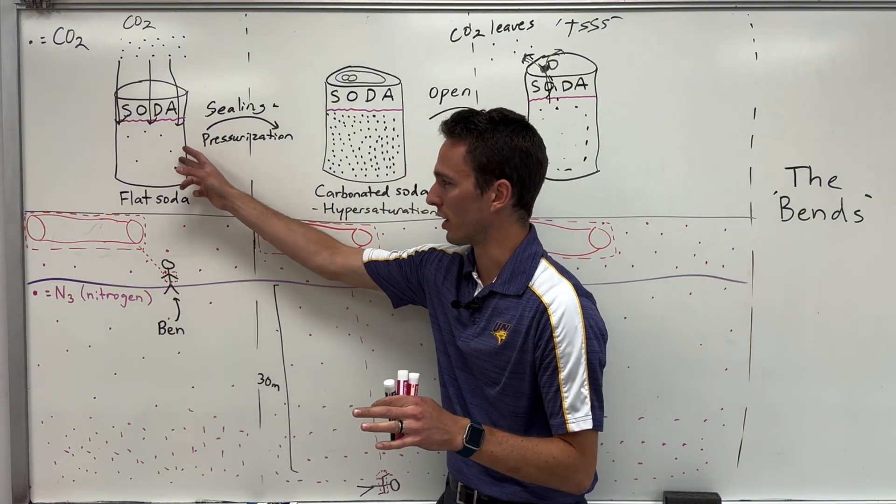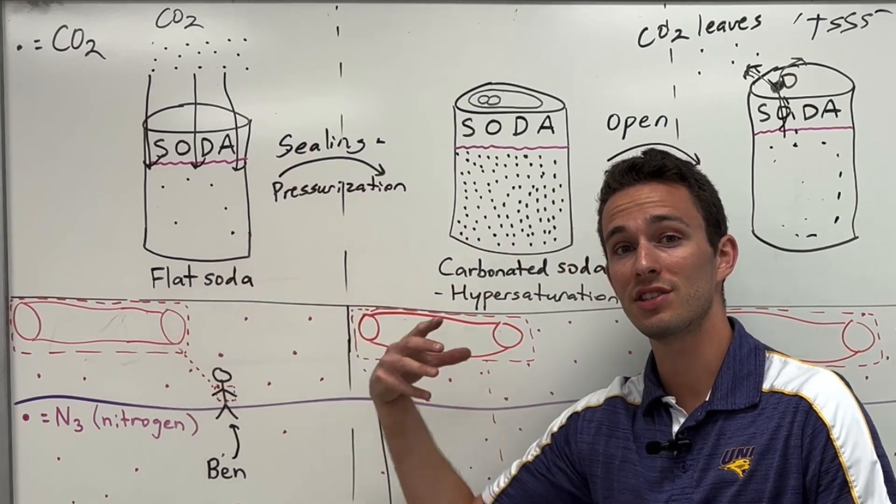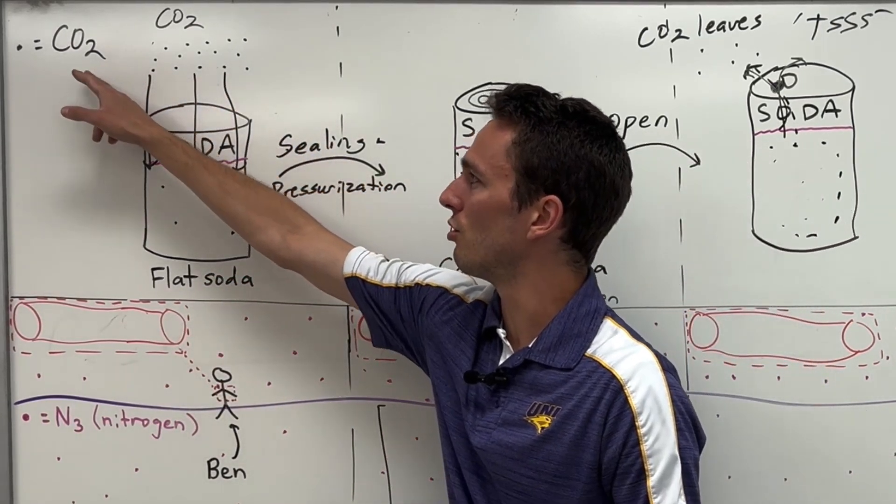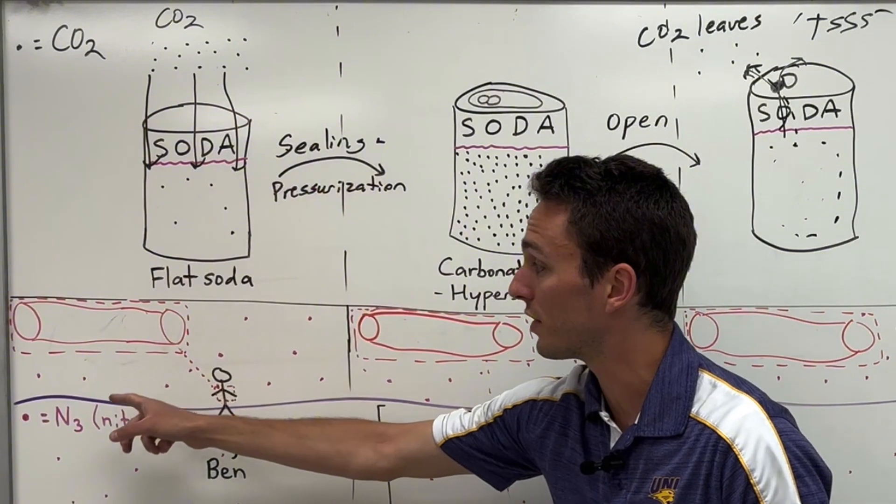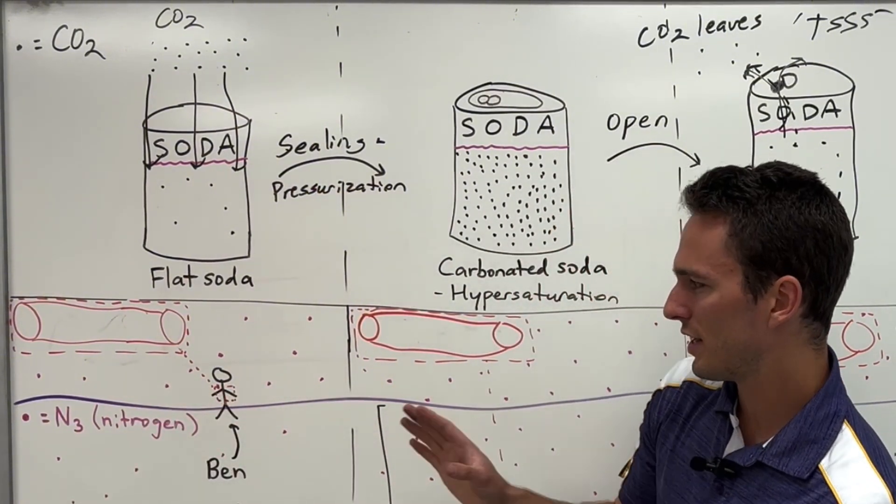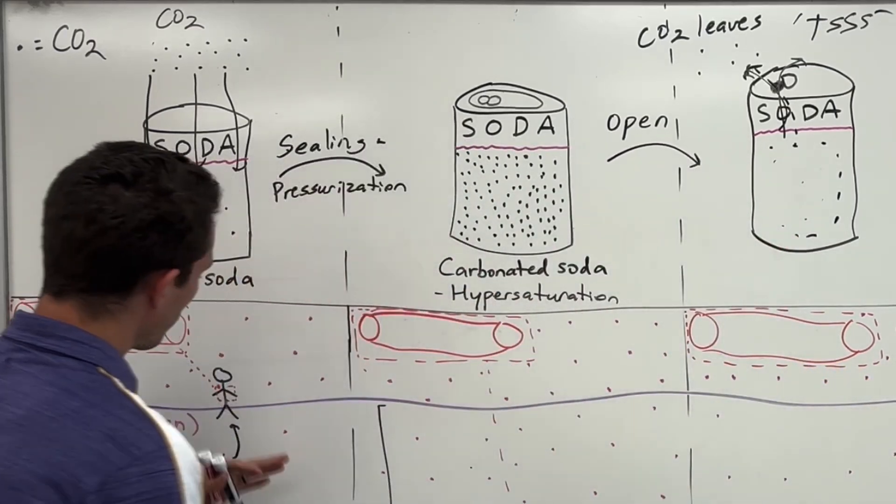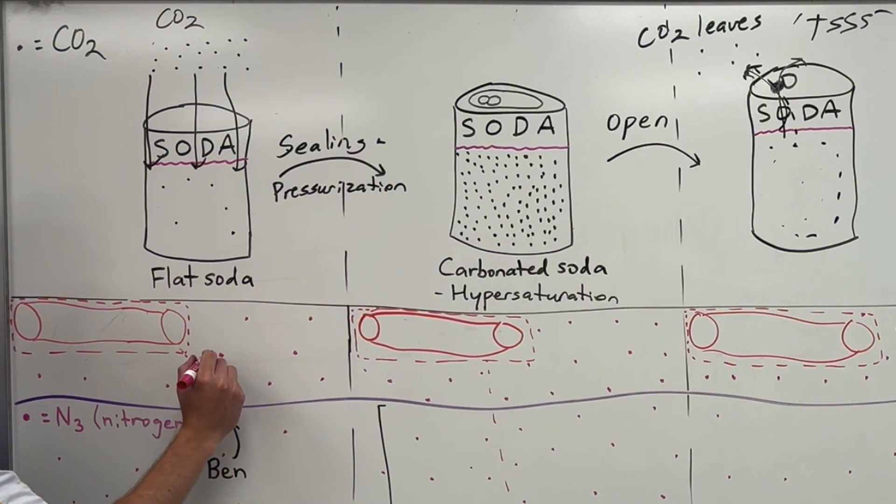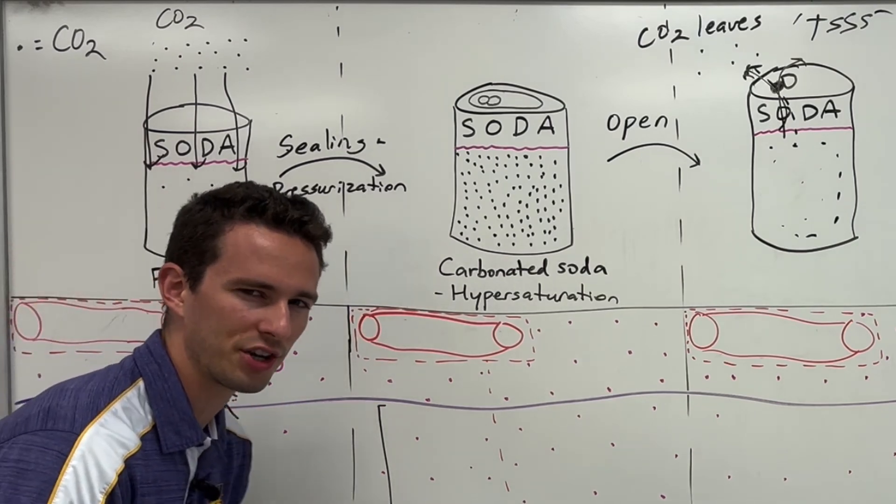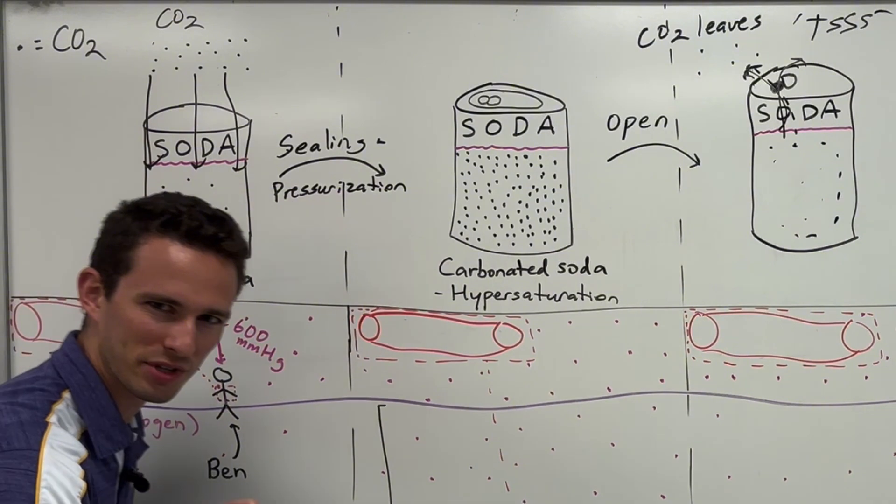So with my analogy with the soda, I want you to imagine that Ben is the can and his bloodstream is the soda itself. Now the difference is that the CO2 in the soda is going to be contrasted with nitrogen gas that's going to get into Ben's blood. Now why nitrogen gas? Well, nitrogen is the most common gas in our atmosphere. In fact, if you were to measure the pressure pushing down on Ben by nitrogen, it would equate to around 600 millimeters of mercury. So that's a pretty good amount of pressure, but the thing with nitrogen is that it really doesn't dissolve very well under normal atmospheric conditions.